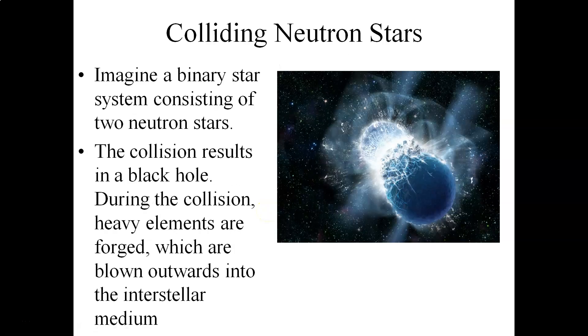Now imagine a binary star system consisting of two neutron stars. Because these neutron stars lose a huge amount of energy as gravitational waves, they will then ultimately collide with each other. When they collide with each other, the collision results in the formation of a black hole.